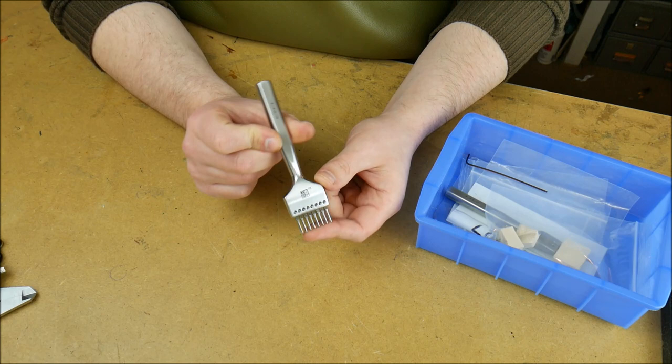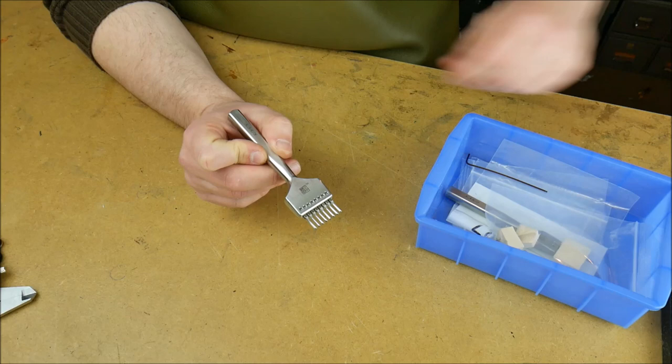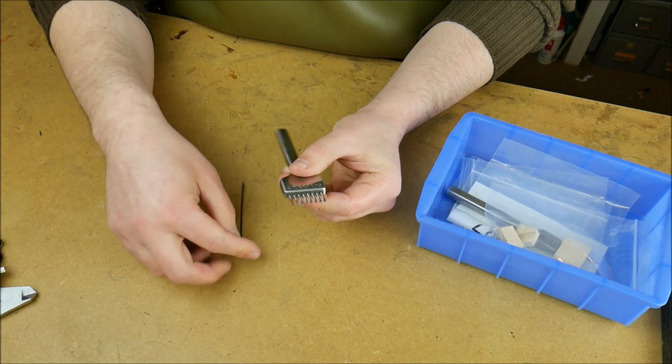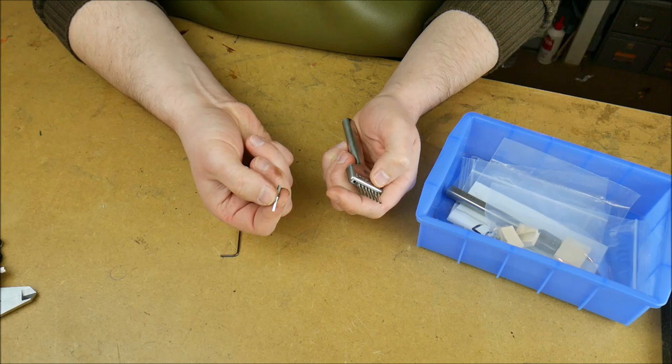The interesting thing about this pricking iron is the teeth are fully removable individually. In the kit you get a 1.5 millimeter symmetric allen key and if you turn half a turn to a full turn you can in fact remove each prong individually like so.